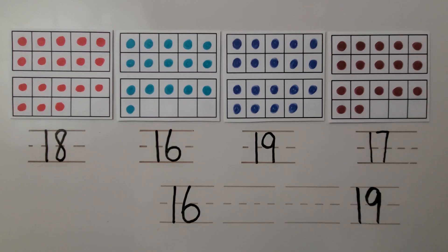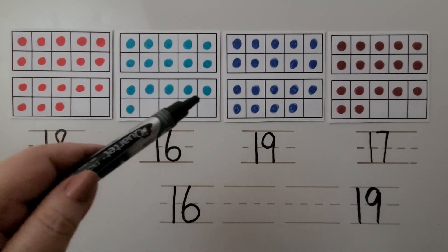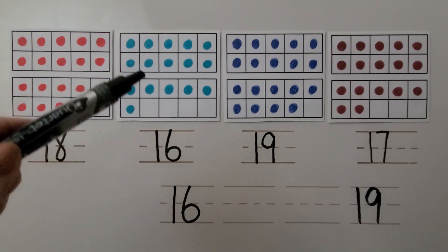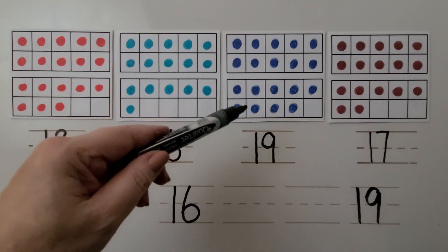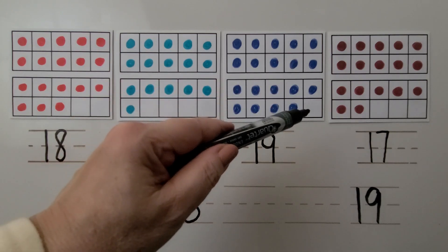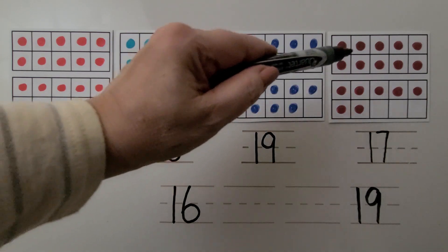Here we have some dots as counters in 10 frames. We know how many are here by starting with a full 10 frame of 10 and counting on. 10, 11, 12, 13, 14, 15, 16, 17, 18. There are 18 red counters here. This one has 10 and 6 more. We have a 5 and a 1. So that's 16. Here we have 10. Here we have 10 frames that are almost full for both of them, except one is missing and one less than 20 is 19. And here we have 10.